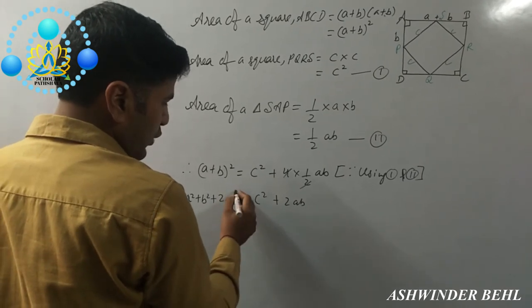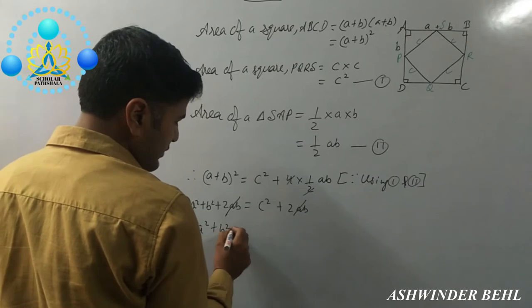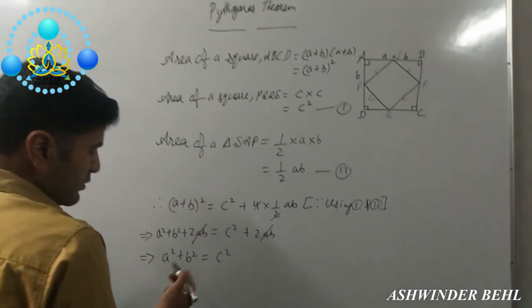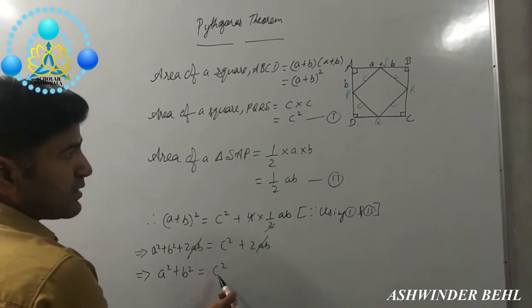So 2AB and 2AB is canceled. Therefore, A square plus B square is equal to C square. This way we can prove the Pythagoras theorem. C means hypotenuse.